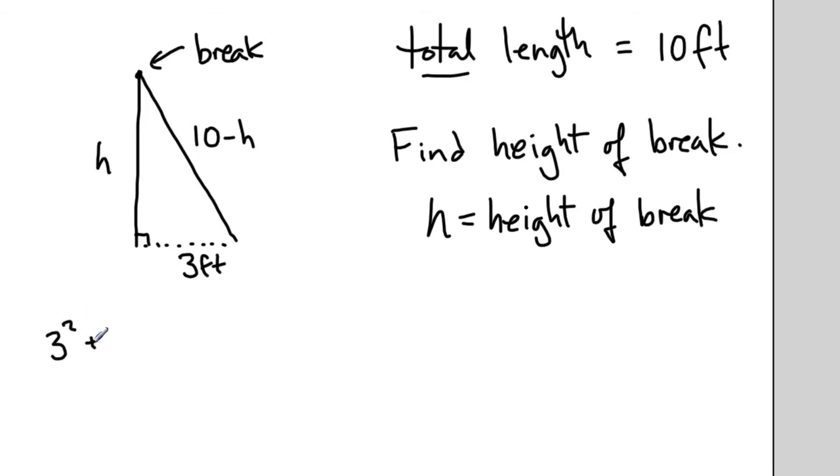So we'll say 3 squared plus h squared has to equal the quantity 10 minus h, whatever that number is, squared. So here's an illustration of using the Pythagorean theorem in ancient Chinese mathematics, possibly as early as Pythagoras, and possibly even before Pythagoras.